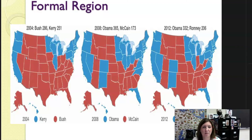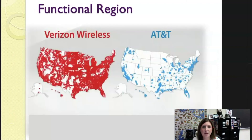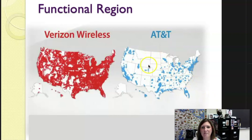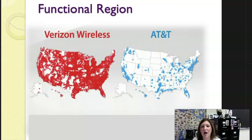For a functional region example, here we have Verizon and AT&T. New technology is breaking down traditional functional regions because the internet and satellite dish television reach further and further from the central node. Cell phone towers and coverage illustrate this — in the Midwest or harsher environments there are fewer cell phone towers and thus less coverage. These maps also show the concentration of population. Cell phone tower service areas for Verizon and AT&T are a really good example of a functional region.